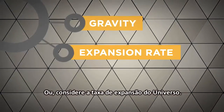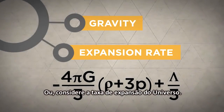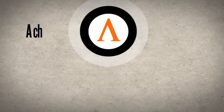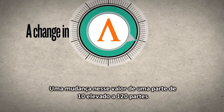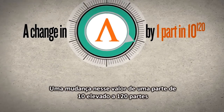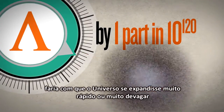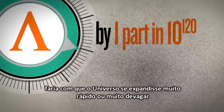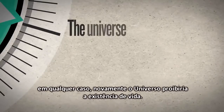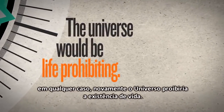Or consider the expansion rate of the universe. This is driven by the cosmological constant. A change in its value by a mere one part in 10 to the 120th parts would cause the universe to expand too rapidly, or too slowly. In either case, the universe would, again, be life-prohibiting.